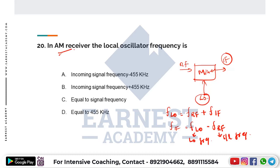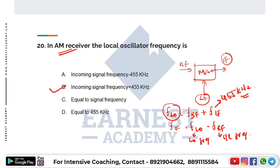In the case of AM, the IF frequency is 455 kHz. So the local oscillator frequency equals the incoming signal frequency plus 455 kHz. The correct answer is: incoming signal frequency plus 455 kHz.